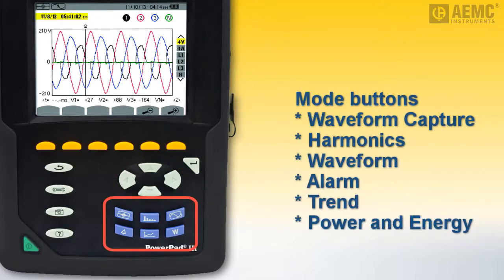Below these are six buttons for selecting the instrument's operational mode. Waveform Capture mode enables you to display and capture transient events and inrush events. Harmonics mode displays harmonic levels for voltage, current, and apparent power, order by order. Waveform mode displays current and voltage graphs, along with measured values and those calculated from voltages and currents. Alarm mode displays overages of programmable thresholds for a variety of parameters. Trend mode records changes to specified parameters. And Power and Energy mode displays power and energy measurements. The full use of these buttons is described in detail in the user manual.